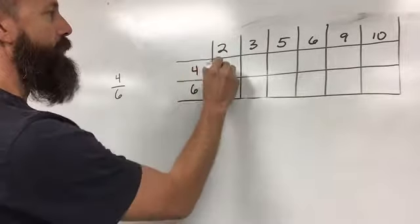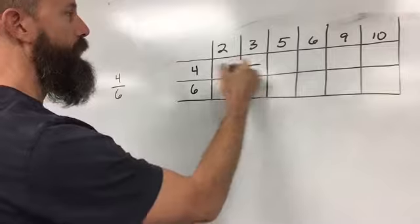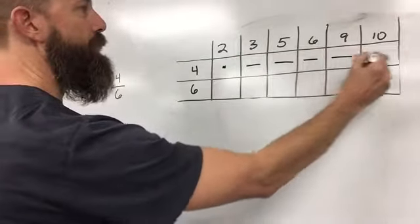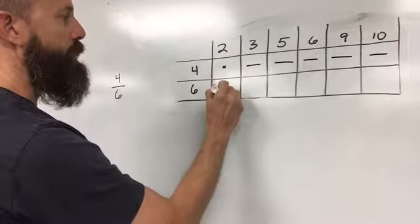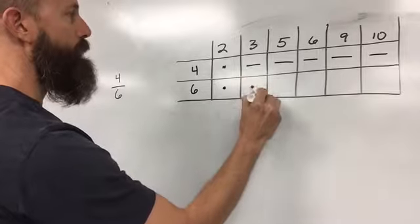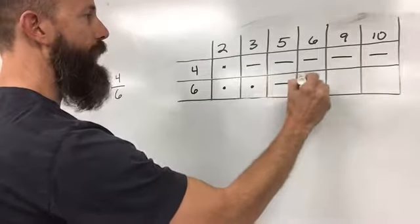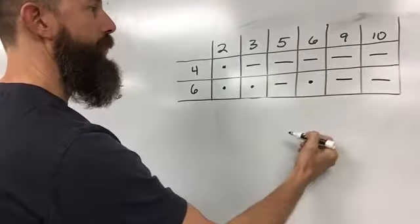You go through and choose yes or no for your divisibility rules. Four is an even number, so it works here. It's not divisible by three, so no. No for fives, no for six, no for nine, no for ten. Six is divisible by two because it's an even number, it's also divisible by three, not five, but it is divisible by six, not nine, and not ten.